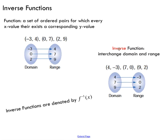To get an inverse function, all you have to do is interchange your x and your y values. When you do that, your domain becomes your range and your range becomes your domain. That's sort of just a quick definition of what an inverse function is — you simply interchange your x and y values.